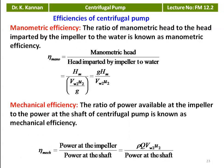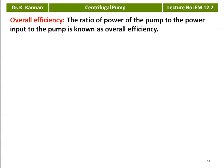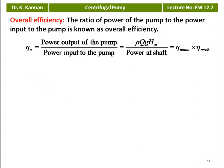Mechanical efficiency is the ratio of power available at the impeller to the power input to the shaft: η_mechanical = power at impeller / power at shaft, where power at the impeller equals ρ·Q·Vw2·U2. Power at the shaft is the power given to the pump by the electrical motor. The overall efficiency is the ratio of power output of the pump to power input to the pump: ρ·g·Q·Hm divided by power at the shaft, which equals manometric efficiency multiplied by mechanical efficiency.